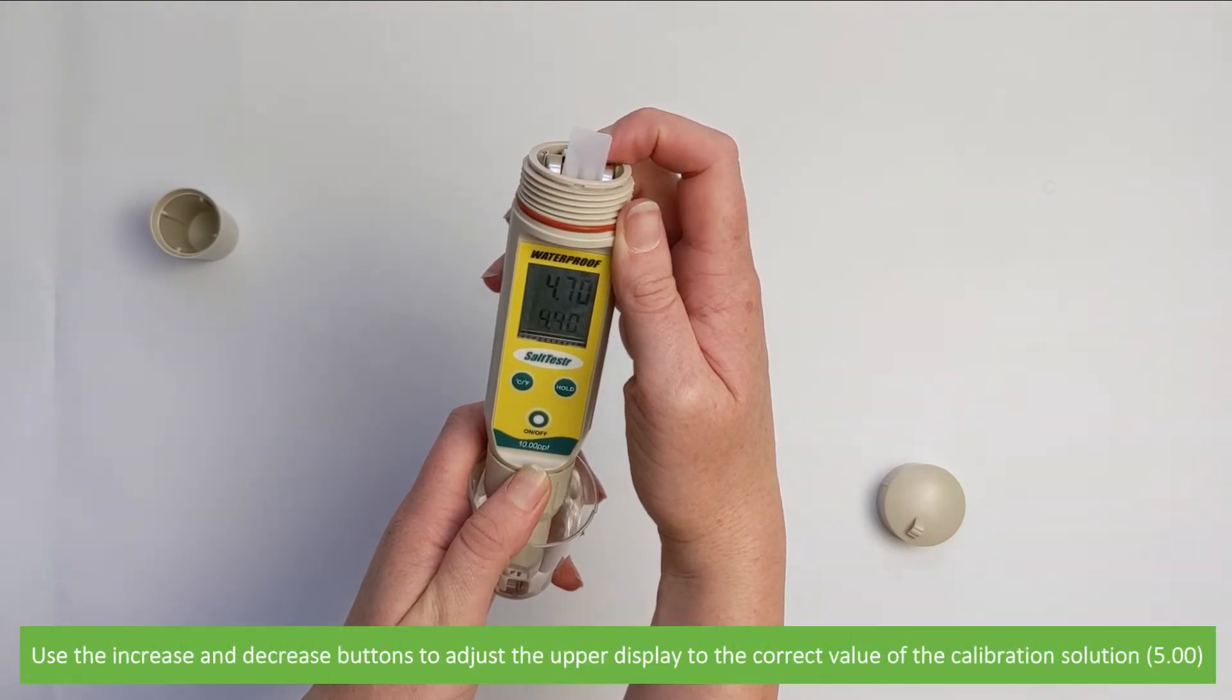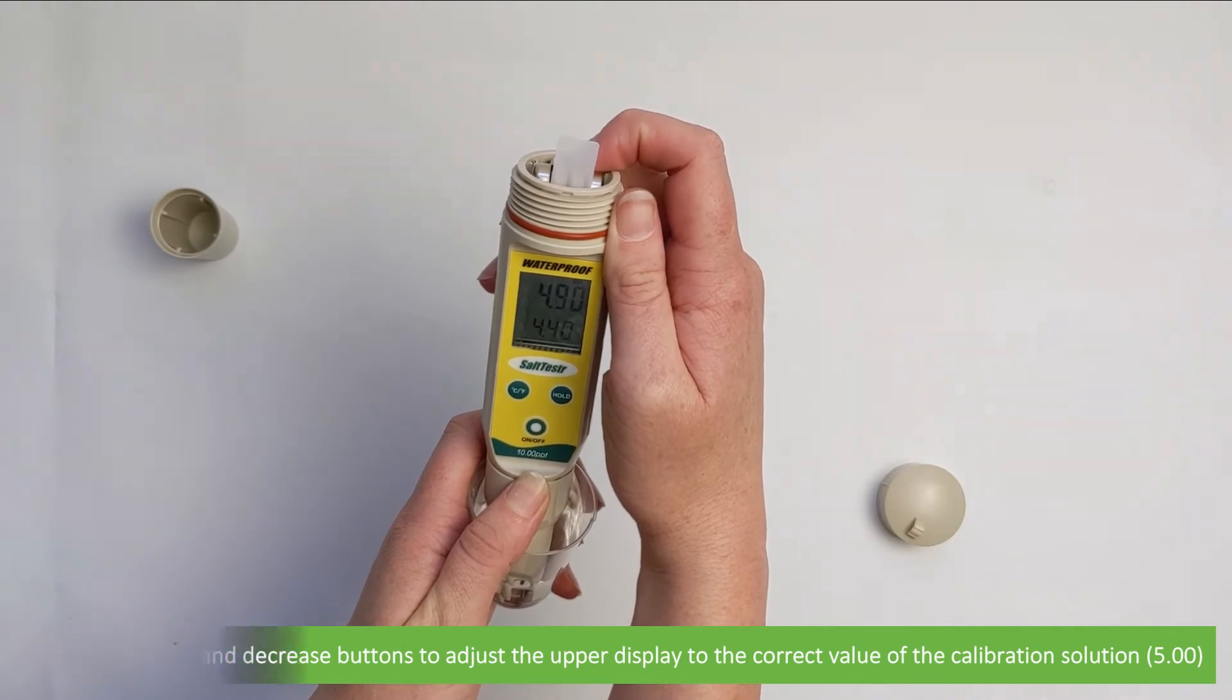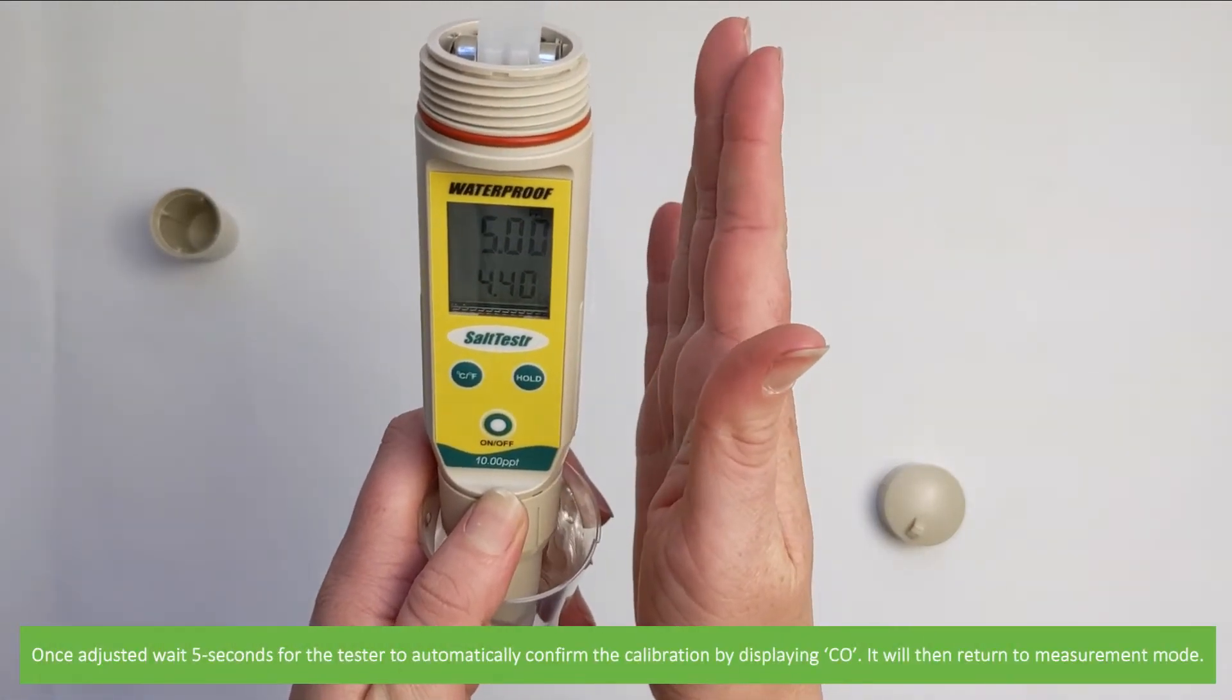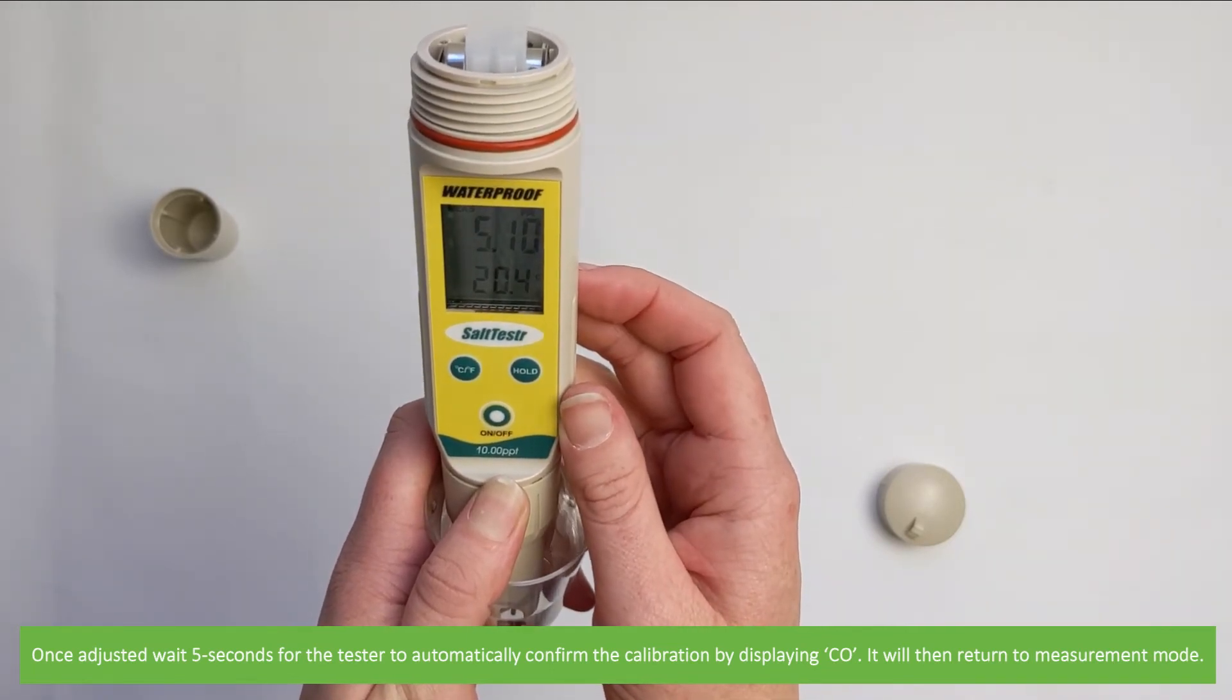Use the increase and decrease buttons to adjust the upper display to the correct value of the calibration solution. Once adjusted, wait five seconds for the tester to automatically confirm the calibration by displaying CO. It will then automatically return to measurement mode.